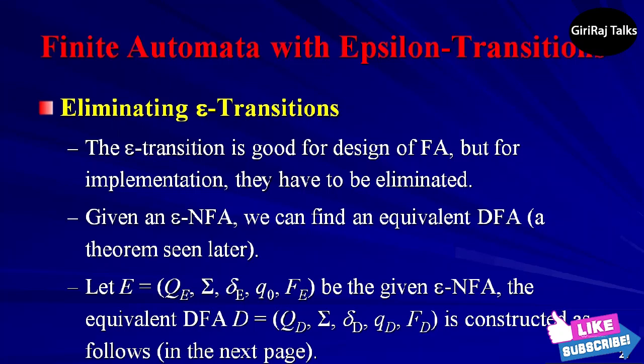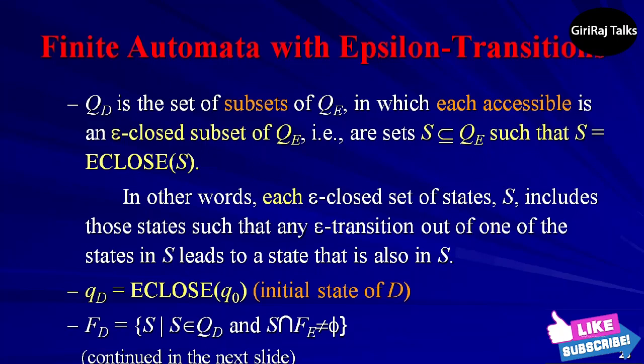Let E = (QE, Σ, δE, q0, FE). Then the equivalent DFA D = (QD, Σ, δD, qD, FD) which are defined as follows. First, QD is the set of subsets of QE. More precisely, we shall find that all accessible states of D are epsilon-closed subsets of QE. That is, sets S ⊆ QE such that S = ECLOSE(S).